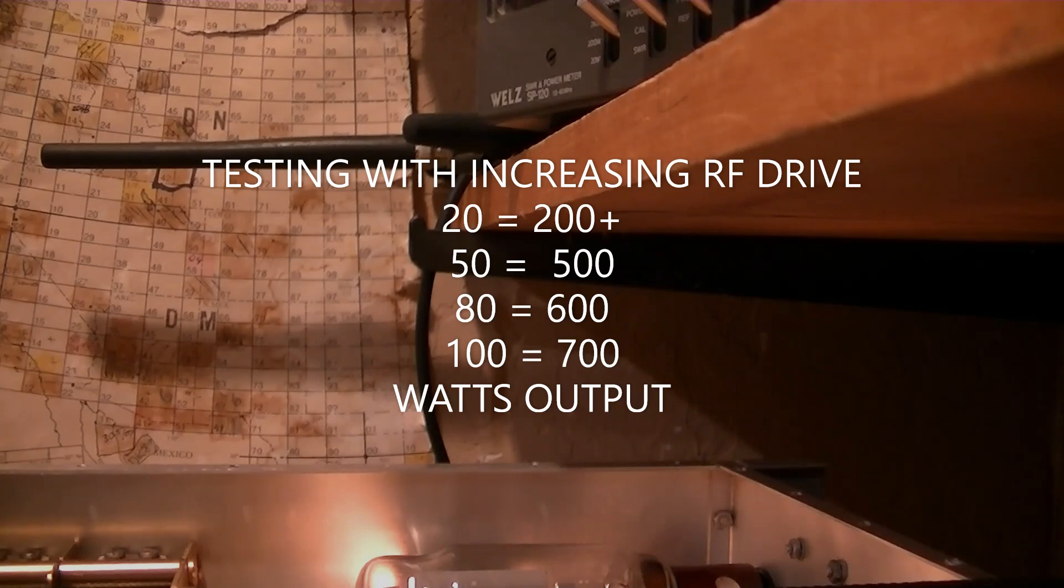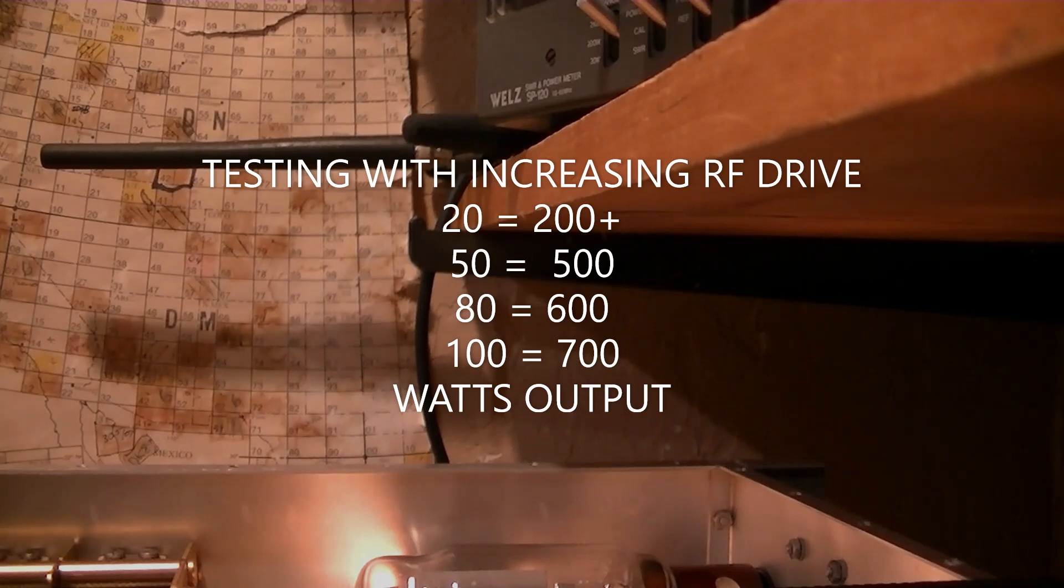Tuning and loading normally. About 1950 B plus under load. Grid current's barely coming up off of the mark.